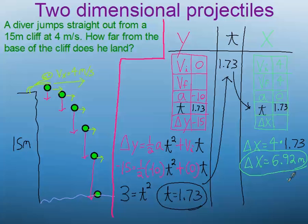After multiplying the 2, I get that the diver landed 6.92 meters away from the bottom of the cliff. Not a bad jump.